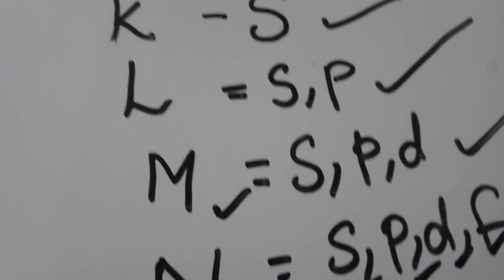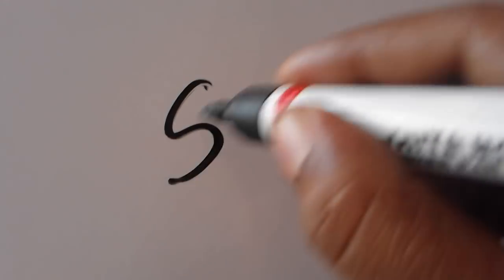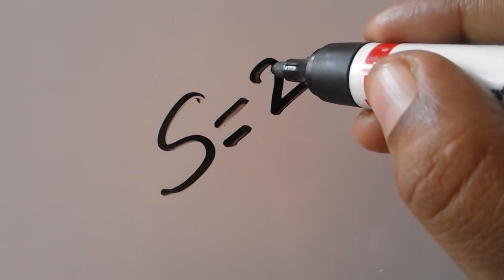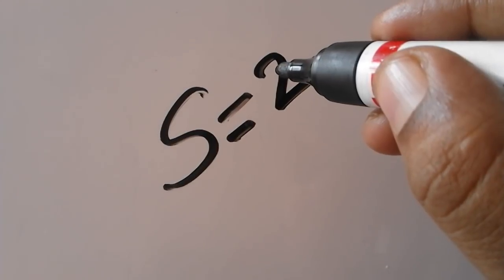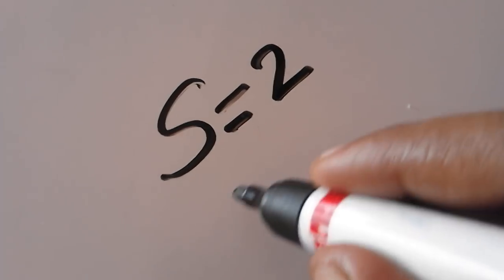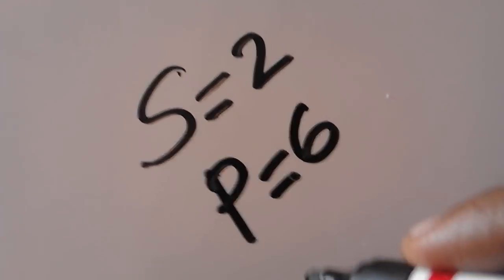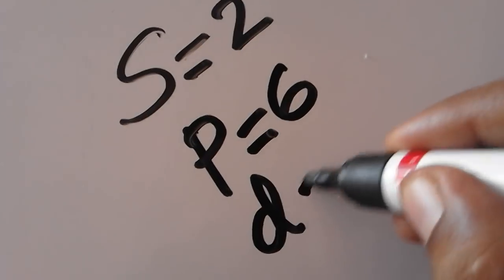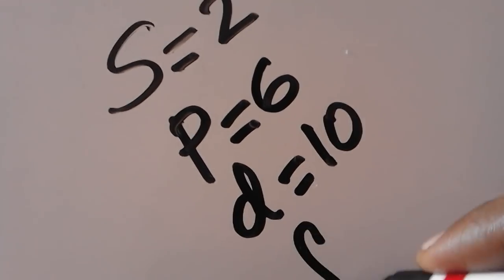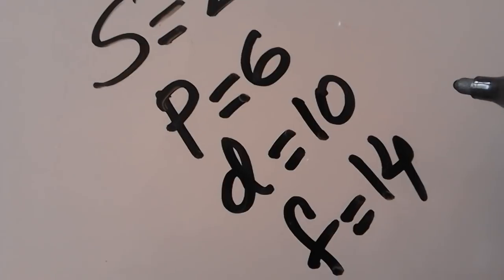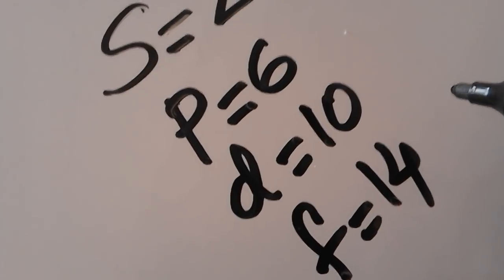If you want to use S in the sub-shell, there are 2 electrons. P in the sub-shell has 6. D in the sub-shell has 10. F in the sub-shell has 14.